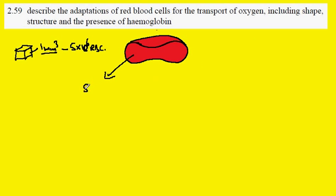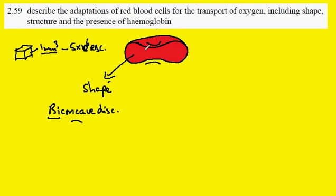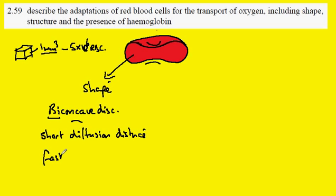Let's take the shape. The shape is described as a bi-concave disc. Bi means two, concave means dipping in — here's the dip, here's the dip, and the disc. This bi-concave disc gives you a short diffusion distance for oxygen, so we get fast diffusion.